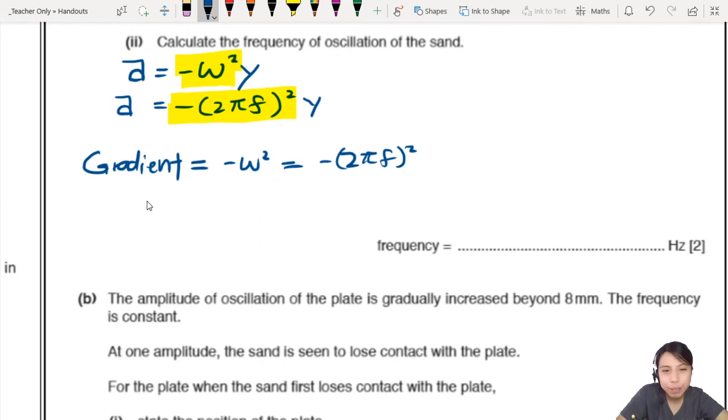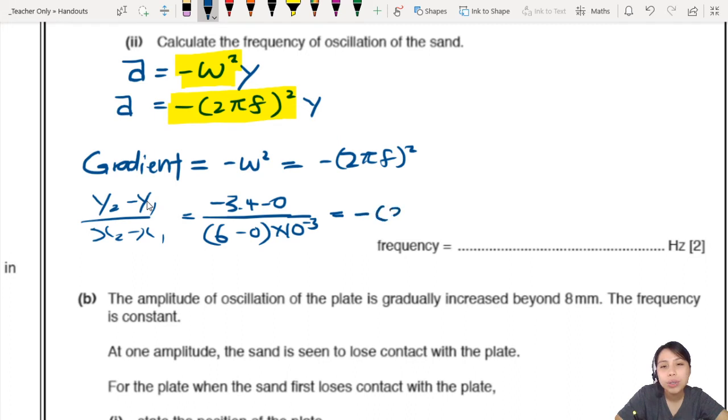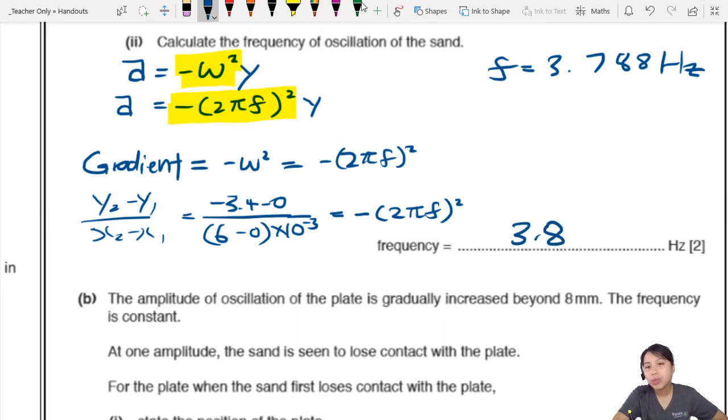Now let us calculate. Gradient of the graph is our negative omega square. Very nice. So y2 minus y1 over x2 minus x1 is the gradient. What is the value? So we have negative 3.4 minus the origin. And from my point that I picked, 6 millimeters minus 0 millimeters. These are in millimeters, so I convert to meters. And that will be equal to negative 2 pi f square. Let's rearrange a little bit. So you want to rearrange and do some calculations so that you have f.